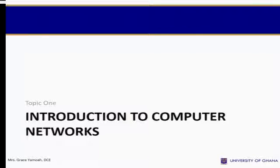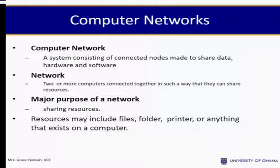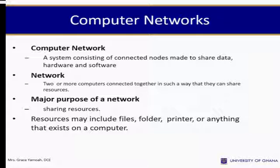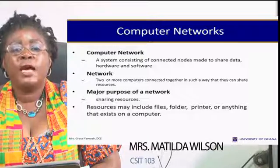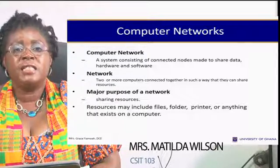Introduction to Computer Networks. A computer network is a system consisting of connected nodes made to share data, hardware, and software. These are interconnected and produce activity around sharing of resources and data. A network is two or more computers connected together in such a way that they can share resources. The major purpose of a network is sharing resources, especially files. Resources may include files, folders, printers, or anything that exists on a computer.